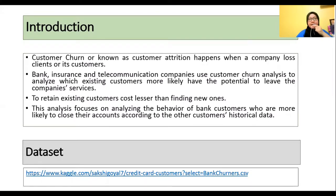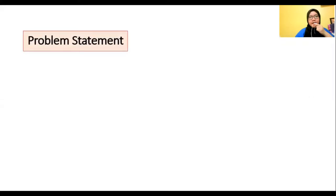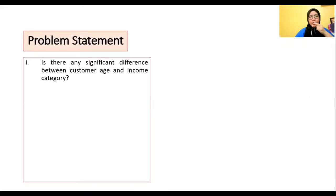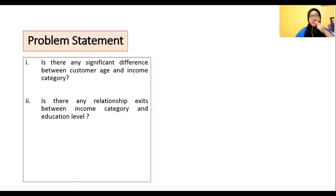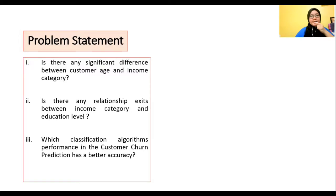For information, this analysis is focused on the behavior of customers who are motivated to close their account, according to other customers' historical data. We have three research questions: Is there any significant difference between customer age and income category? Is there any relationship between income category and education level? And which classification algorithm for customer attrition has better accuracy?